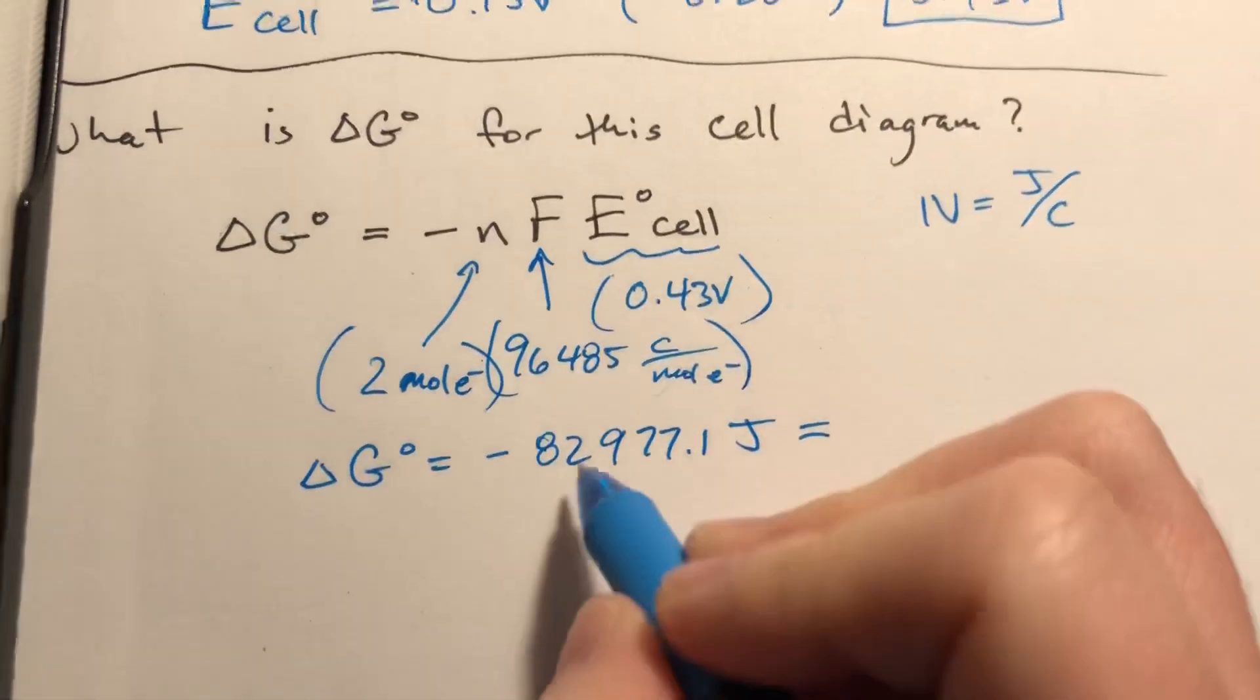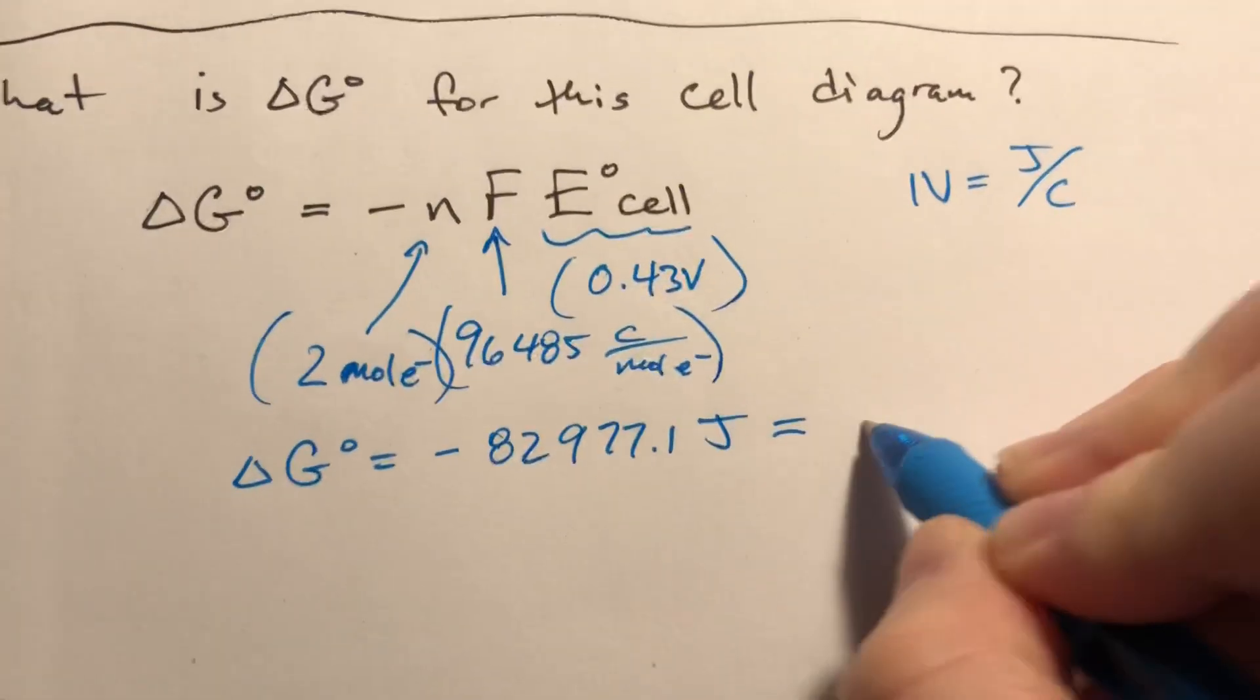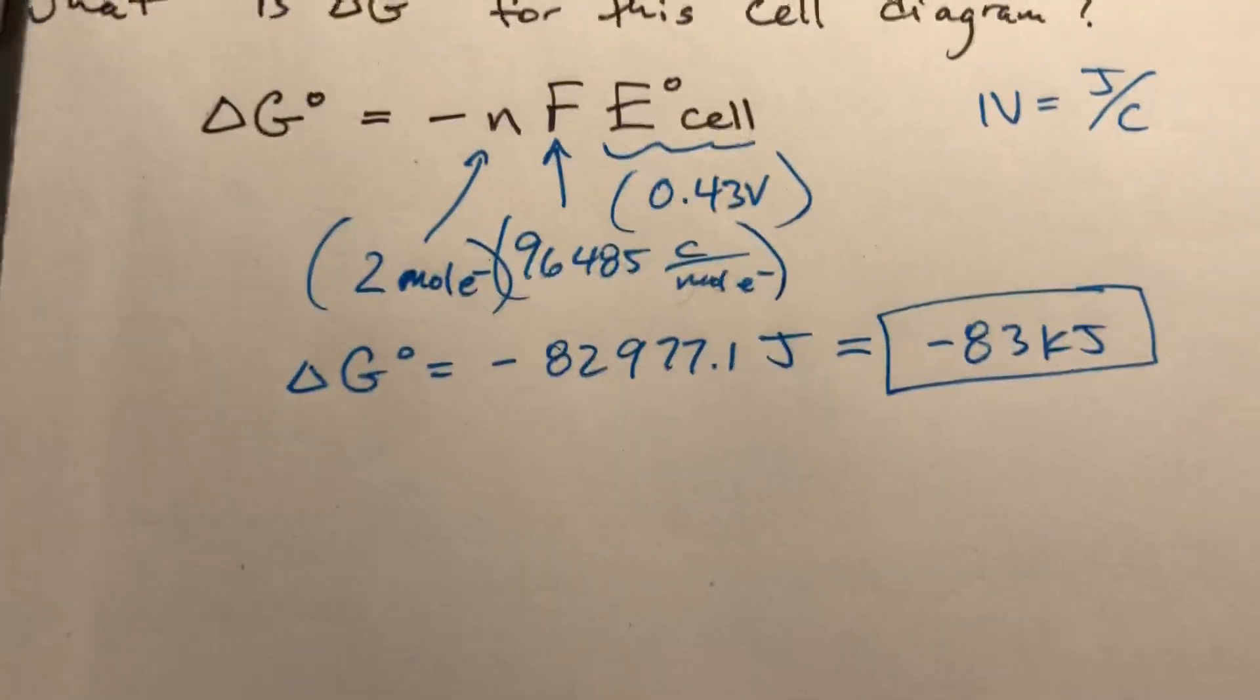Sig figs, we basically only get two. So this would round to, and we can convert this to kilojoules, this would be negative 83 kilojoules, as the delta G.